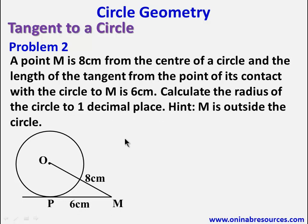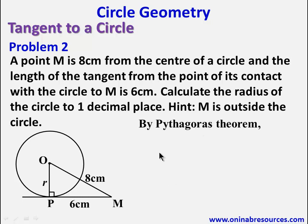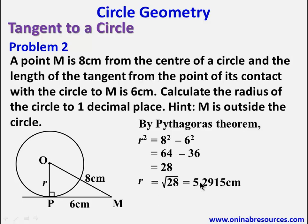Calculate the radius of the circle to 1 decimal place. OP is the radius, call it R. Based on the theorem under review, OP is perpendicular to PM, so the angle at P is 90 degrees. Therefore, triangle OPM is a right-angled triangle. Applying Pythagoras' theorem, R squared equals 8 squared minus 6 squared, that is 64 minus 36, which gives 28. So R is the square root of 28, which gives 5.2915 centimeters.